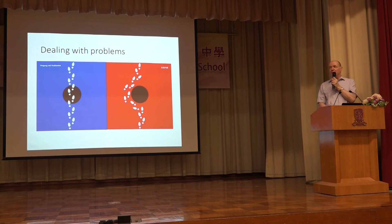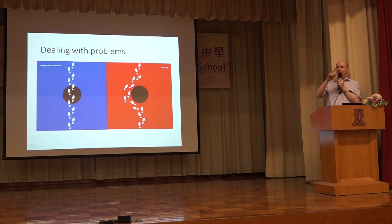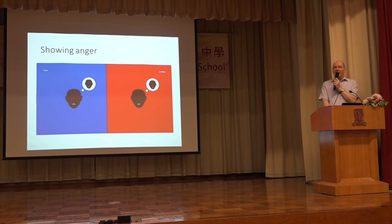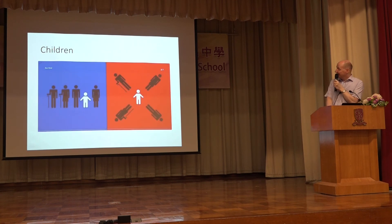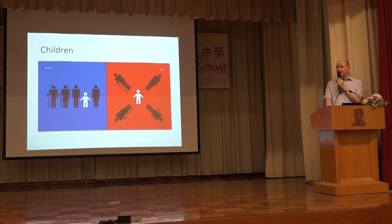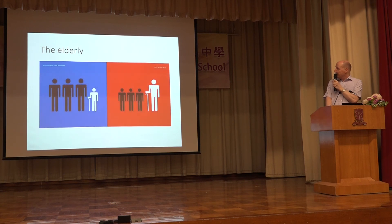How do some cultures deal with problems? Some deal with them head on — go straight towards the problem and solve it. Others like to go around the problem to avoid it, to keep harmony. How do we show anger? In some cultures we show it directly. In others we hide our anger behind a smiley face. In some cultures children are the center of society; in others they're just one part. The same applies to the elderly — it could be very important or not very important.